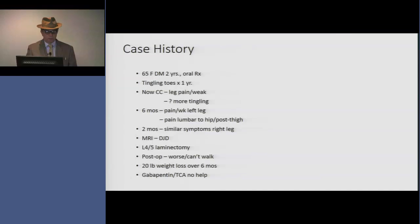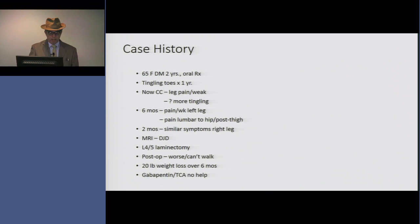She had an MRI which showed minimal degenerative disease, but she ended up having a laminectomy, and post-op she kept getting worse and she couldn't walk. She had a 20-pound weight loss over six months. She was put on gabapentin and tricyclics with no help, and at this point a neurology consult was put in.